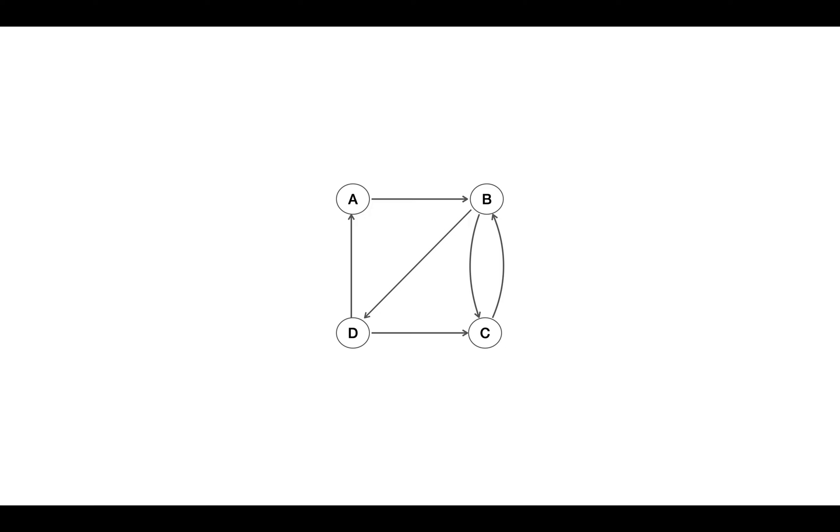For example, in this graph, if we start from vertex A, A can reach B, C, and D. Similarly, if we start from vertex B, we can reach vertex A, D, and C as well.